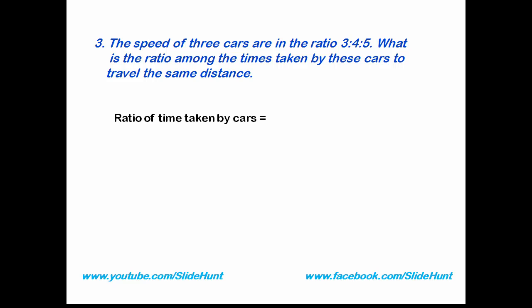So the ratio of time taken by the 3 cars are 1 by 3 is to 1 by 4 is to 1 by 5. Now multiply each of the fraction by the LCM of denominator. LCM of 3, 4, and 5 is 60. Now simplify it: 3 times 20 is 60, 4 times 15 is 60, and 5 times 12 is 60. So we get 20 is to 15 is to 12.